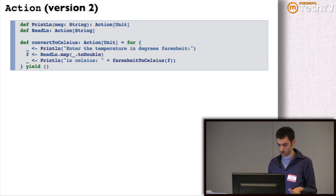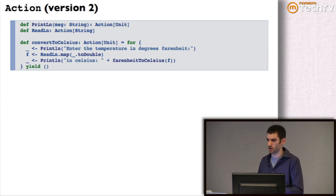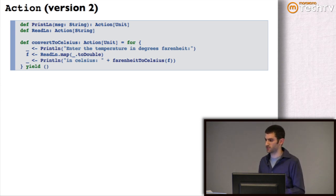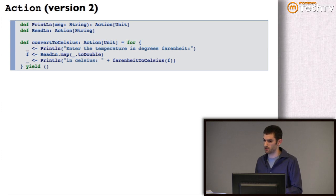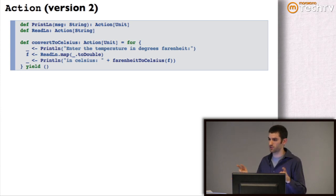If you look at this code, it actually looks very much like the original imperative program we wrote — which is not really a coincidence. But this is not actually doing anything. This is not actually performing any side effects. This is just returning a pure description of what needs to happen. It's only when I actually invoke run to interpret this description of this little language that I actually pay for those side effects.